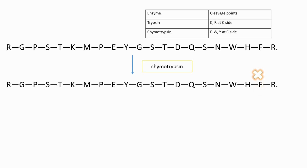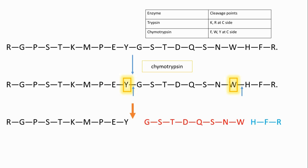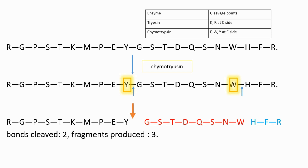Scanning for W — there is one W. Scanning for Y — there is one Y. So cleavage occurs at the W site and at the Y site, leading to the following fragments. Three fragments are produced, so note that there are three fragments and two bonds cleaved by chymotrypsin.